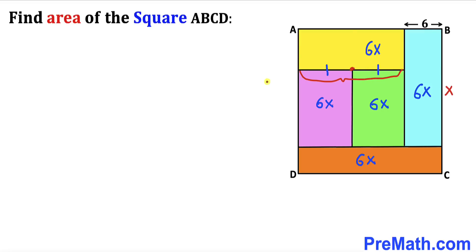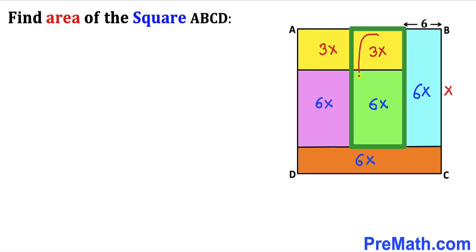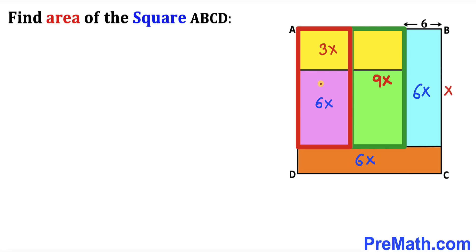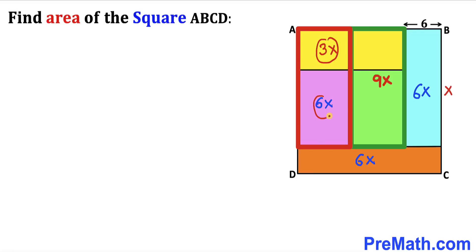Since these two side lengths are equal, this point must be the midpoint of the whole side length. Therefore, this vertical line bisects the yellow rectangle into two equal parts. If the whole area is 6x, then each half is 3x. The combined area of this big shaded rectangle is 3x + 6x = 9x.